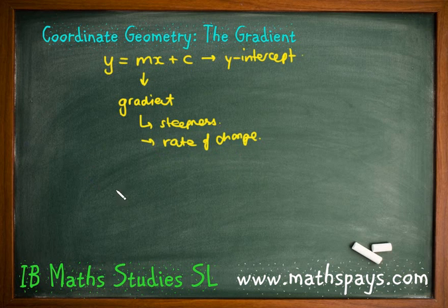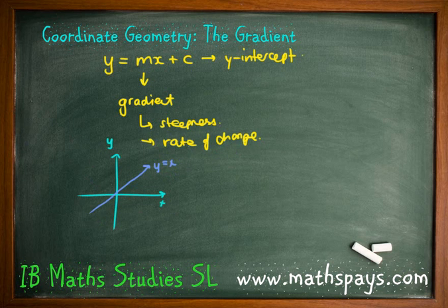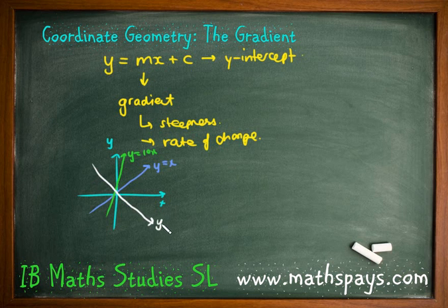For example, if we take a Cartesian plane and had a graph of y equals x, we knew that y equals 10x would be much steeper. We also knew that a line going the other way would be y equals negative x. So we know how to discriminate between gradients of 10, 1, and negative 1.